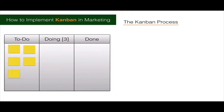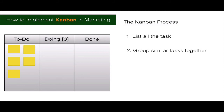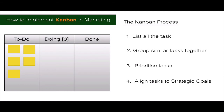Now let's go to Kanban. The first thing you need to do when implementing Kanban is to list all the tasks you normally work on. Then you group similar tasks together. Number three, you prioritize your tasks. And number four, you align the tasks to meet a strategic goal. Whatever you're working on on a Kanban board, you need to set a strategic goal you're looking to achieve as a team or as an individual, and then you work on that.